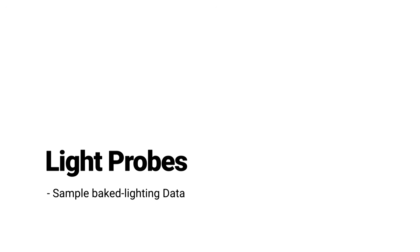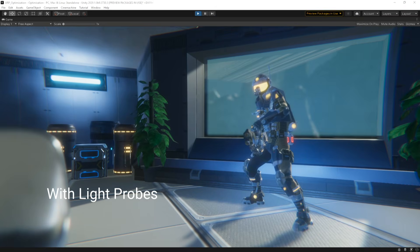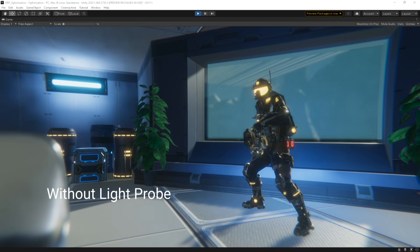Use Light Probes. Light Probes sample the lighting data in your scene during baking and allow the bounce light information to be passed onto dynamic objects that may move or change, such as characters or vehicles. This helps them blend into and feel more natural in the baked lighting environment. Here you can see the difference between how our character looks with and without light probes active in our scene.